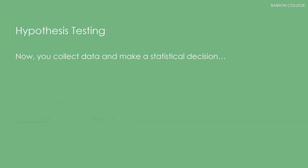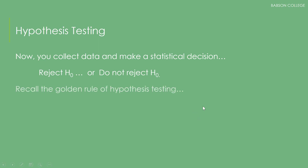Now you collect your data and make a statistical decision. That decision should clearly state whether you reject or do not reject the null hypothesis. Recall the golden rule of hypothesis testing: if p is low, HO must go.